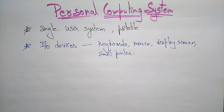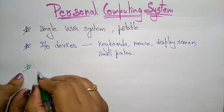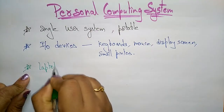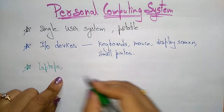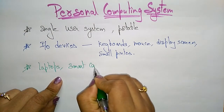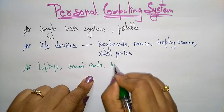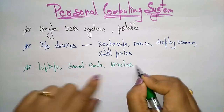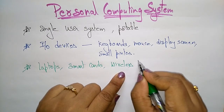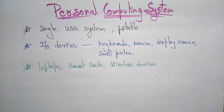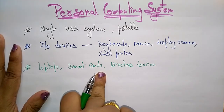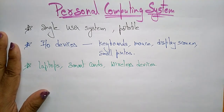Different types of personal computing systems include laptops, smart cards, and wireless devices. All of these that are used in your home are personal computing systems. If a single person is using any of these gadgets, you call it a personal computing system — the laptop, smart cards, and wireless devices you are using.